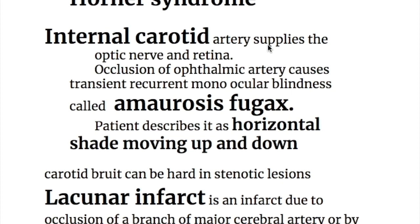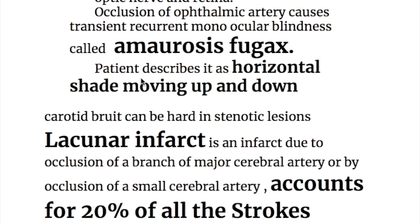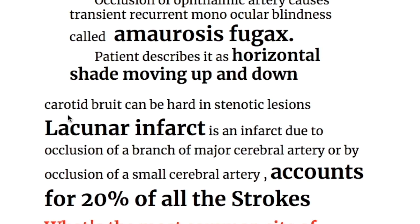The internal carotid artery supplies the optic nerve and retina. Occlusion of the ophthalmic artery, a branch of the internal carotid artery, causes transient recurrent monocular blindness called amaurosis fugax. The patient describes it as a horizontal shade moving up and down. In carotid stenosis, there is a carotid bruit.